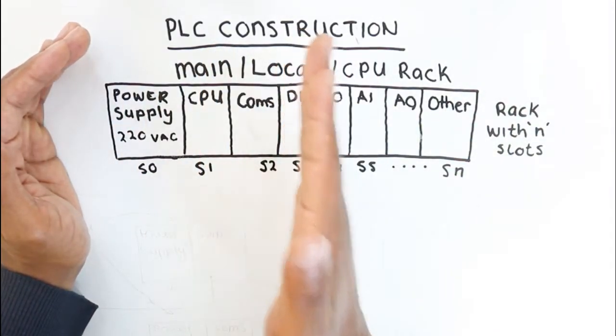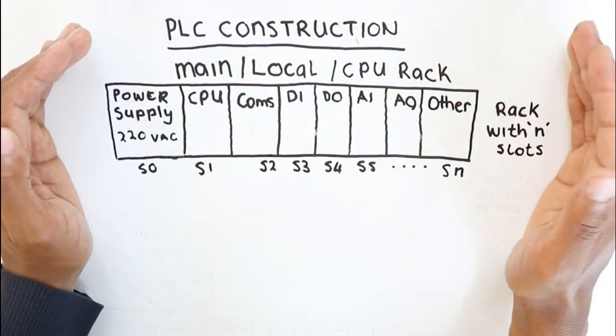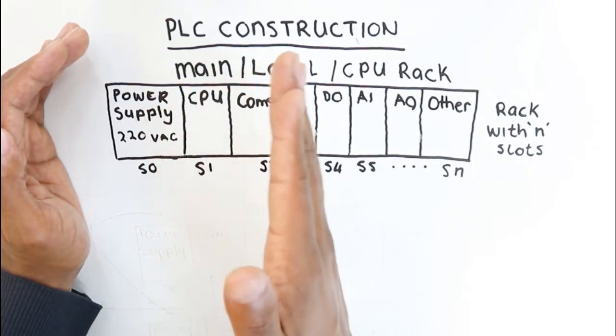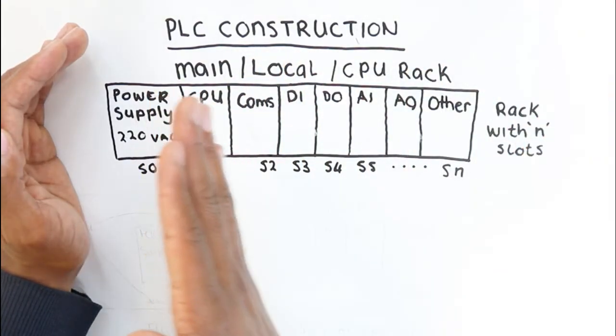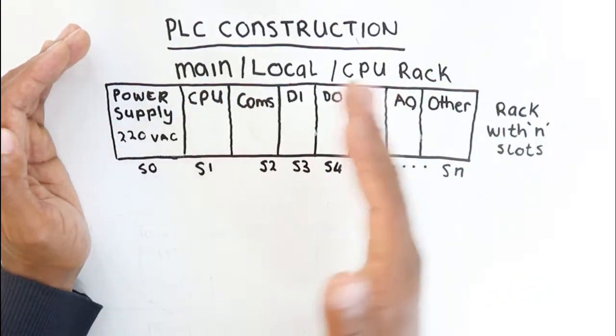When you buy a PLC rack, usually the rack will come empty and you then need to buy the cards separately that you are going to slot into your rack. The types of cards that are available for a PLC, I'm going to go into them in a later video, but for now we'll just stick to this example.